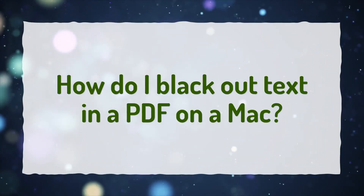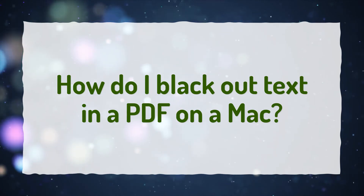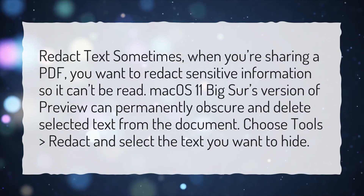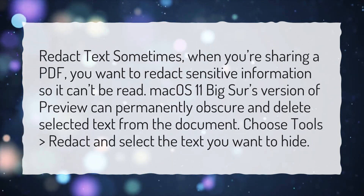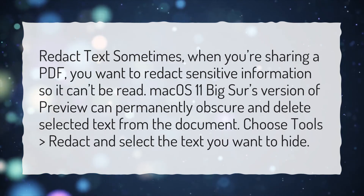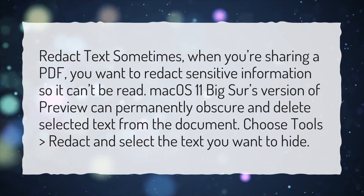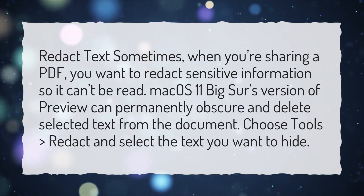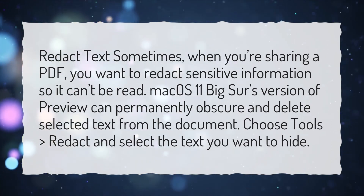How do I black out text in a PDF on a Mac? Redact text — sometimes when you're sharing a PDF, you want to redact sensitive information so it can't be read. Mac OS 11 Big Sur's version of Preview can permanently obscure and delete selected text from the document. Choose Tools > Redact and select the text you want to hide.